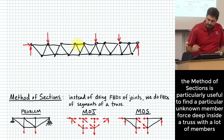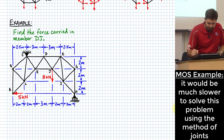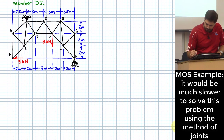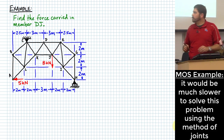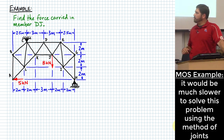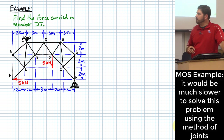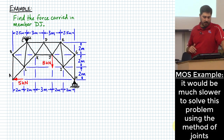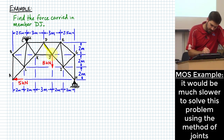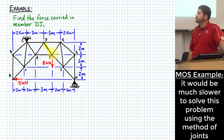The method of sections is very often a useful way to go about finding a specific member quickly. Let's do an example problem. Here's an example where we have all the members arranged, all the geometry set up, and we know there are a couple of forces being applied: a 5 kilonewton force to the left at joint A, and an 8 kilonewton force downward at J. We need to find the force carried in member DJ.